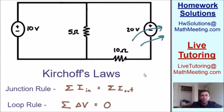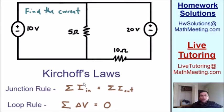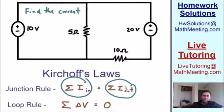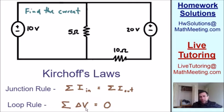Let's get started right away with this example. We're going to use Kirchhoff's Laws to find the current running through this circuit. The Junction Rule states that the sum of the currents going into a junction is equal to the sum of the current coming out of a junction. The Loop Rule says that if you go in a loop, the sum of all of the voltage changes in that loop is equal to zero.